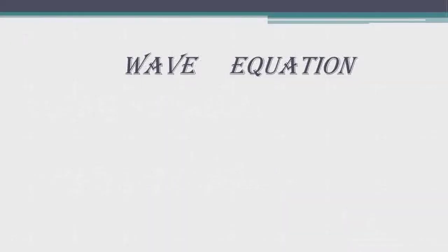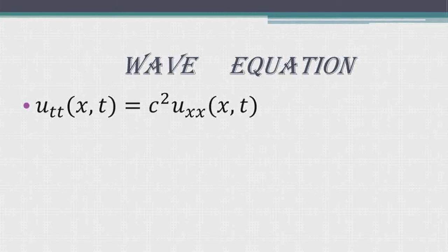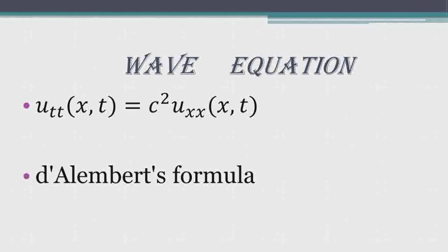Let me introduce the wave equation. The wave equation is u_tt equals c squared times u_xx, where c squared is an arbitrary constant. The variable t represents time generally, and x is a spatial coordinate. The wave equation was first written down by the mathematician D'Alembert in the 1740s, when he was studying the vibration of strings.